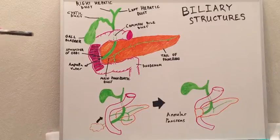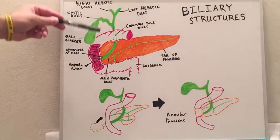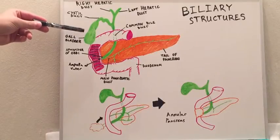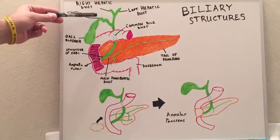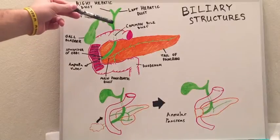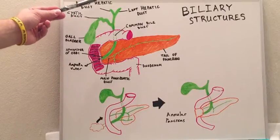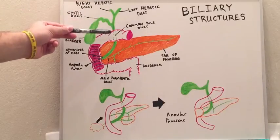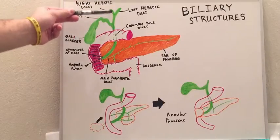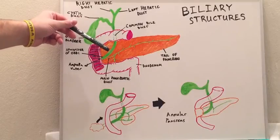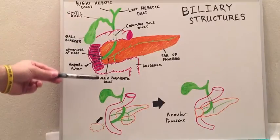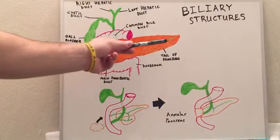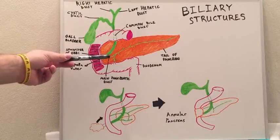We can see here we have our gallbladder, which houses and stores the bile from the liver. It has a duct called the cystic duct which traverses all the way into the common bile duct and meets up with the right and left hepatic ducts to form the common bile duct, which comes down all the way into the pancreas where it meets up with the main pancreatic duct, which goes the entire duration of the tail of the pancreas.